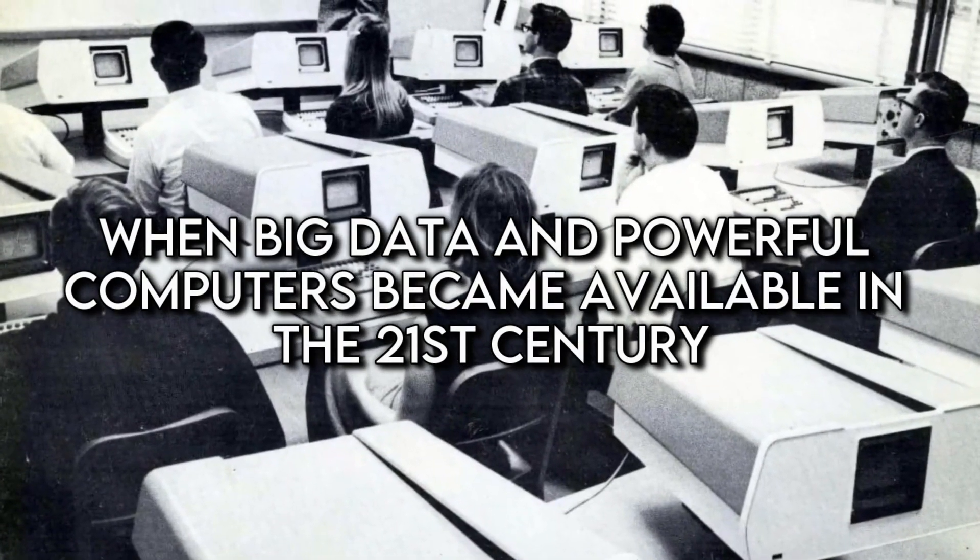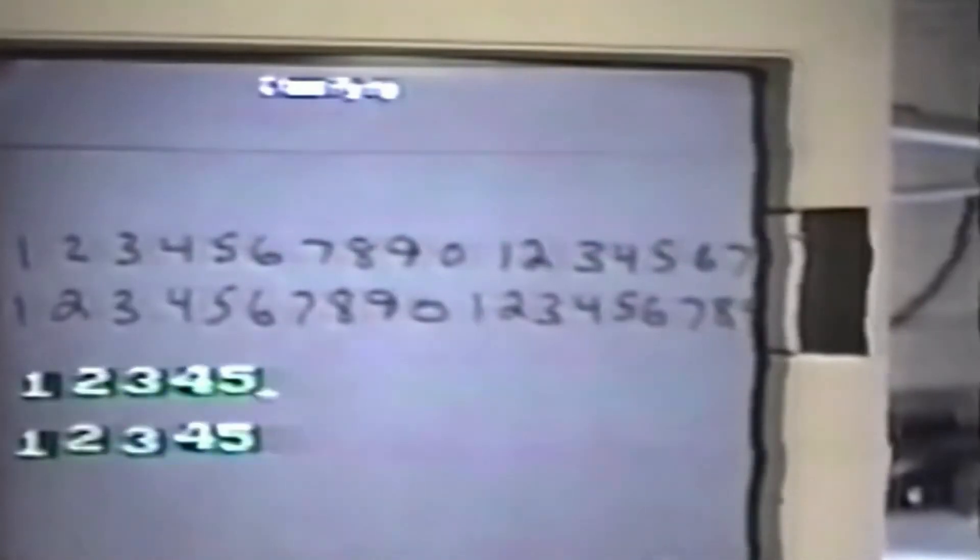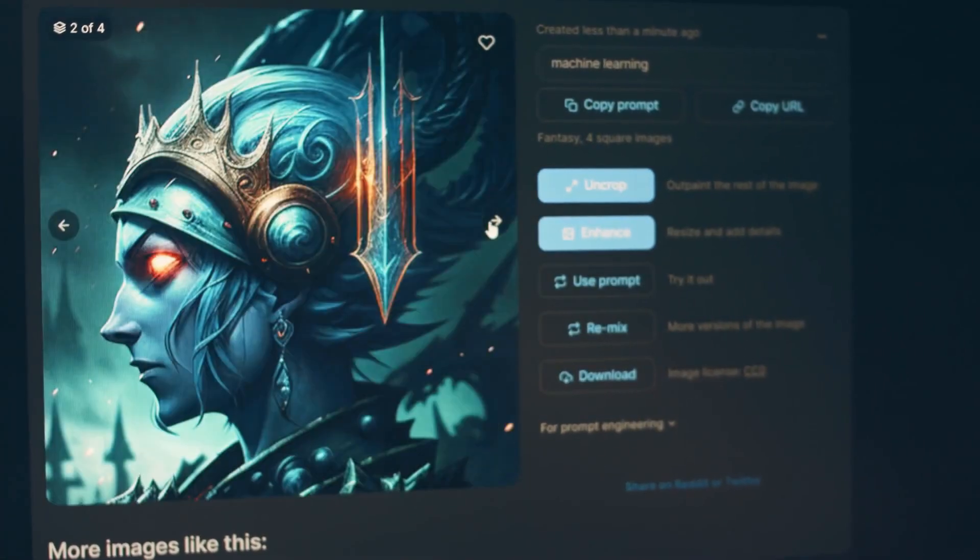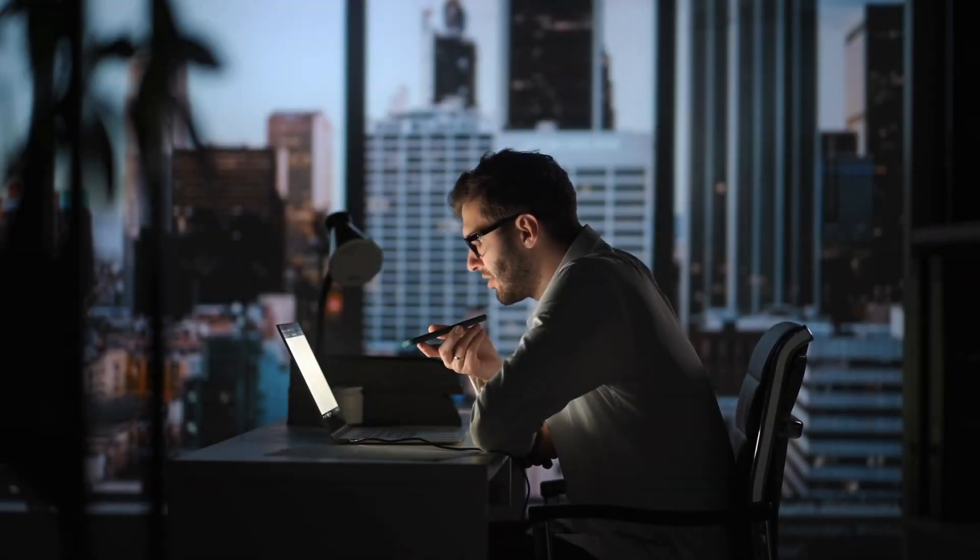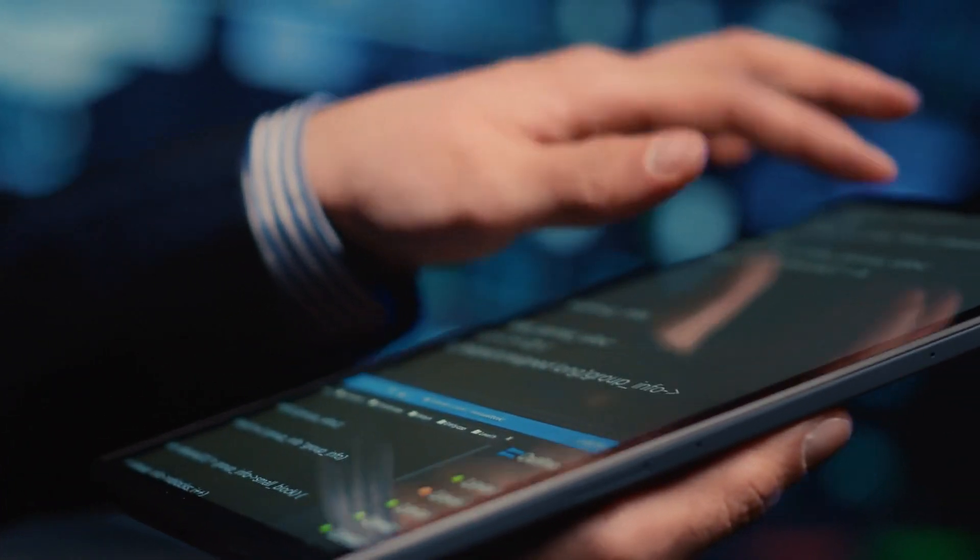When big data and powerful computers became available in the 21st century, machine learning emerged as a game changer. Now, computers could recognize patterns and make decisions independently, leading to the development of voice assistance, image recognition, and recommendation systems we see today.